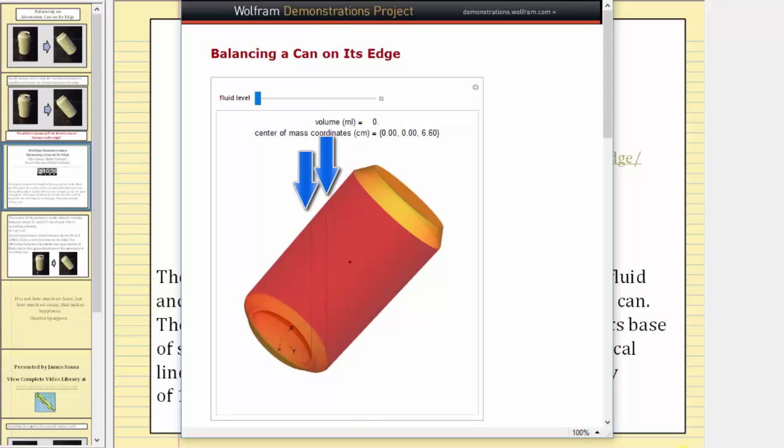So right now the can is empty, and this black point is the center of mass. Notice how it's outside the vertical lines, which represent the base of support, and therefore an empty can will not balance on its edge.